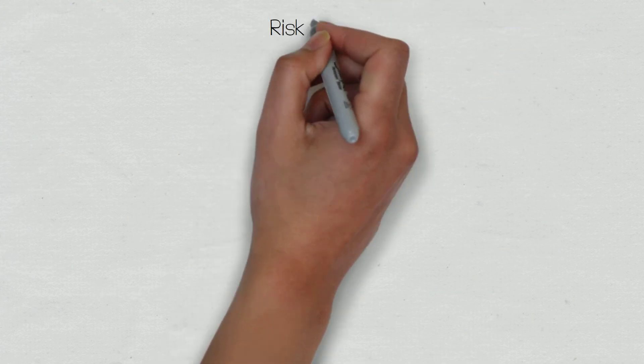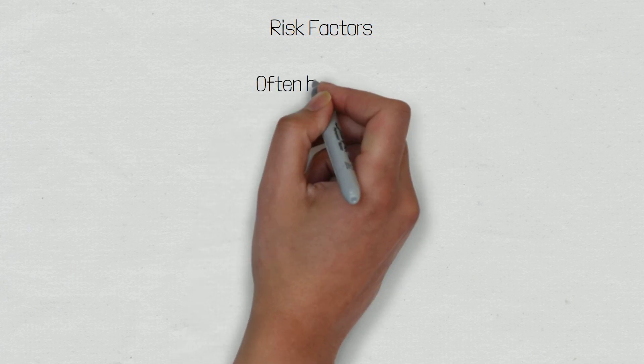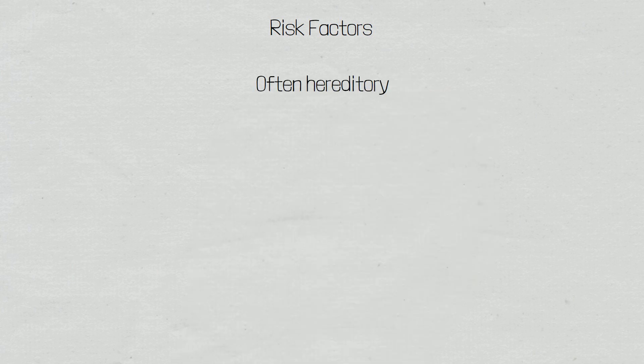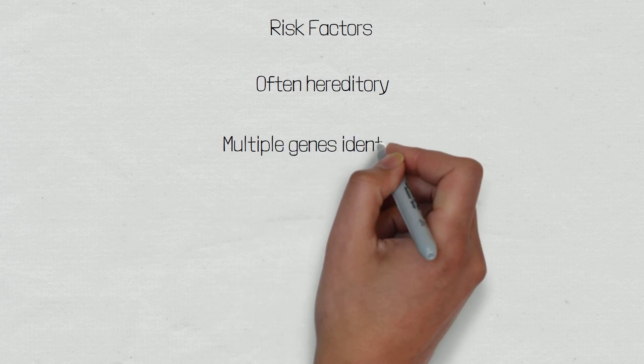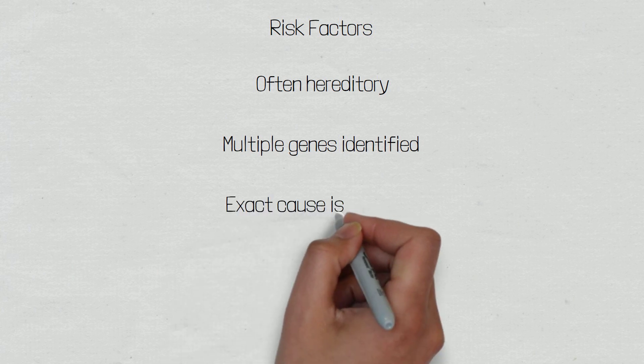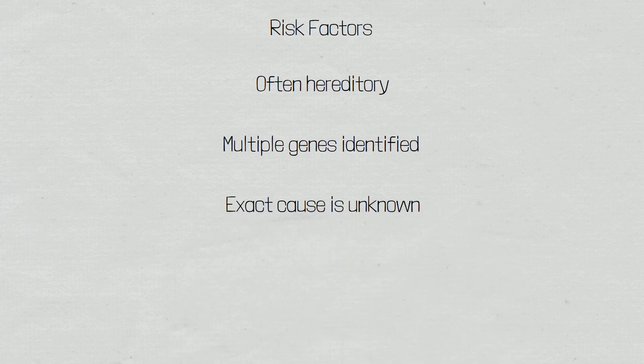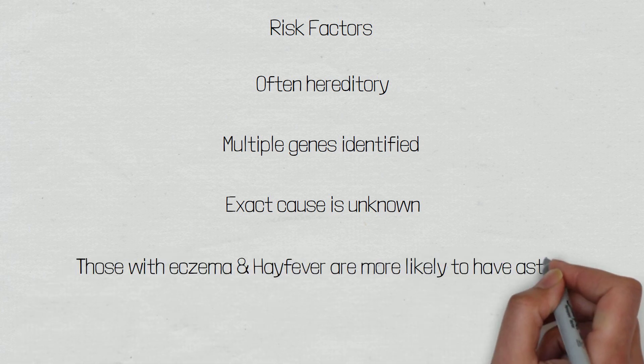Now let's look at some of the factors that increase a patient's chance of developing asthma. Asthma is a familial disorder with multiple genes being identified that play a role in susceptibility. The exact reasons as to why a person develops asthma is unknown but it is thought to be multifactorial and those who have other atopic conditions such as eczema and hay fever are more susceptible to having asthma.